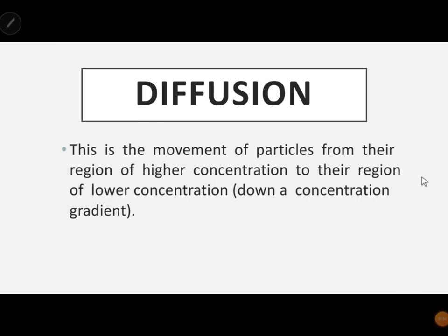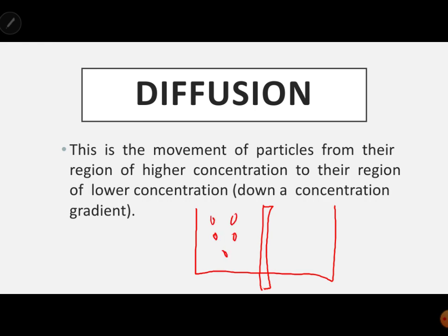Let's look at diffusion. Diffusion is the movement of particles from a region of high concentration to a region of lower concentration — down the concentration gradient. Let's see an example: here we have a barrier, with more particles on one side and less particles on the other.